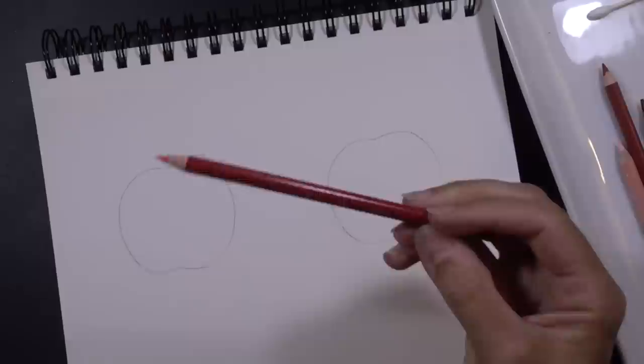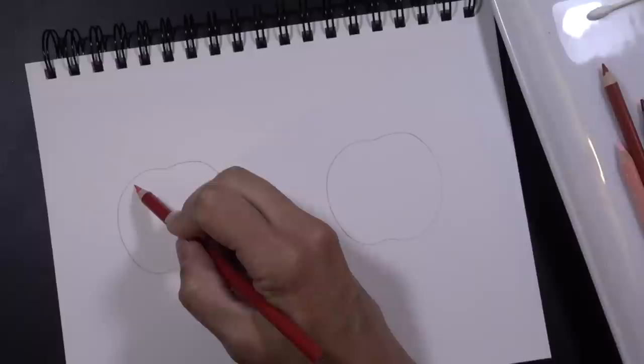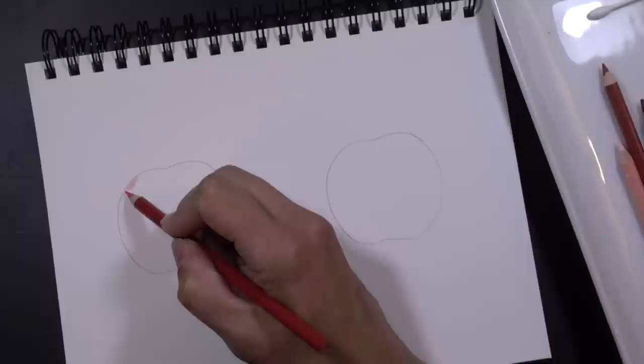Alright, today I'm going to show you two different ways that you can apply a layering technique. Now I've drawn two little apple shapes to just demonstrate each. It's better than just a little circle. Now on this first apple, we're just going to layer with one single color, one pencil, and it's going to be this red pencil right here.